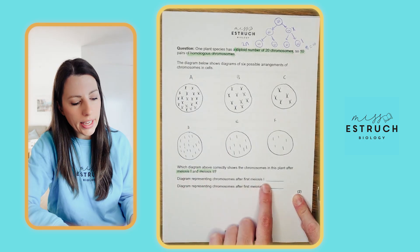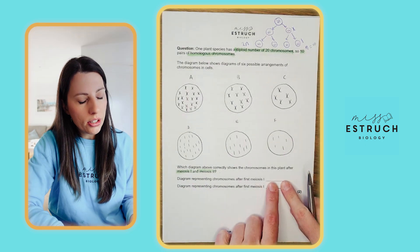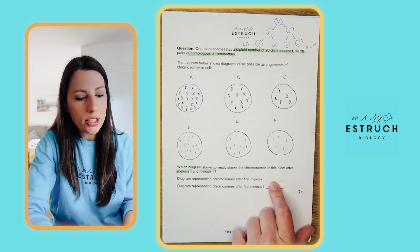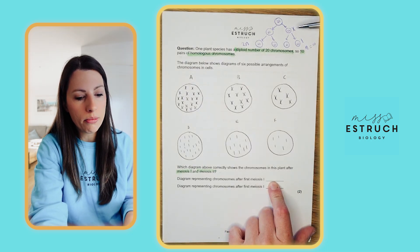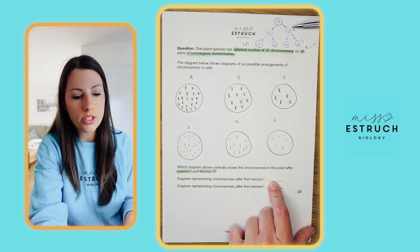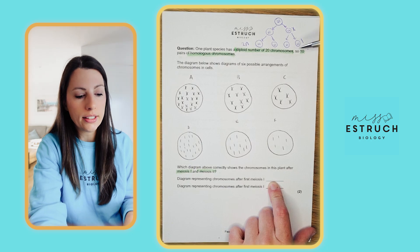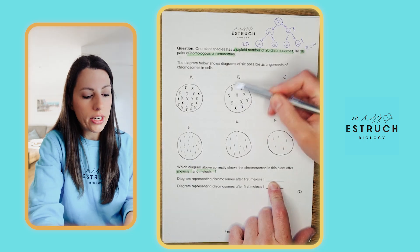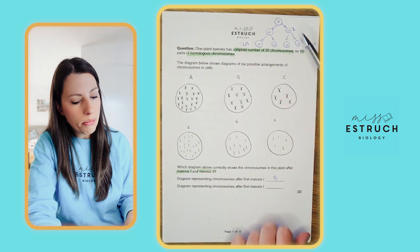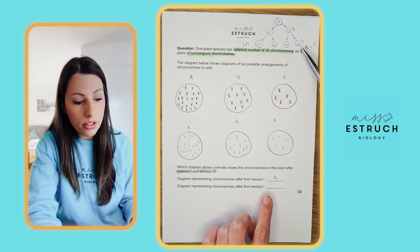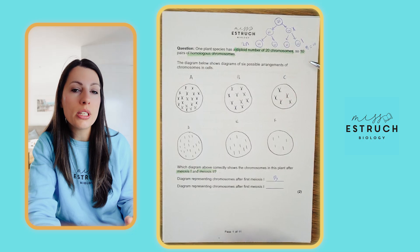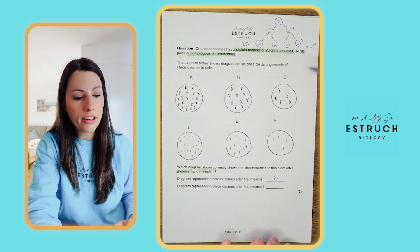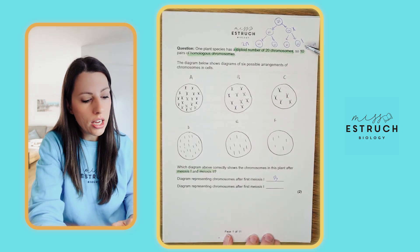After meiosis 1 we have 10 chromosomes and they still look like two sister chromatids joined at the centromere — that's picture B. After meiosis 2 we still have 10 chromosomes but they appear as a single thread-like structure — that's picture E.